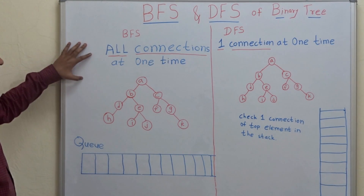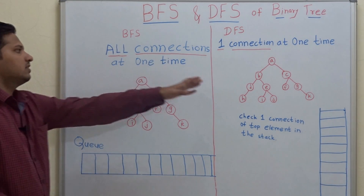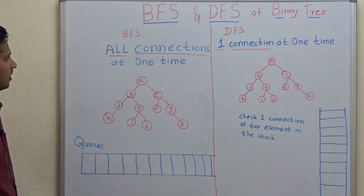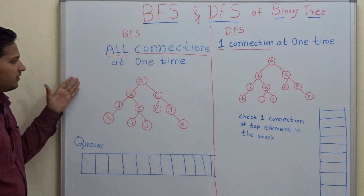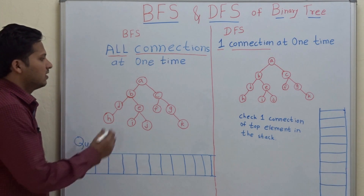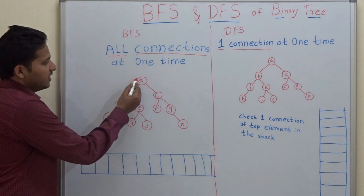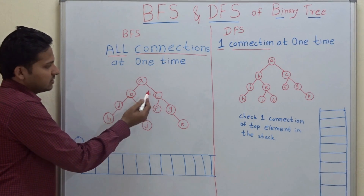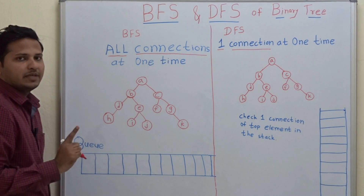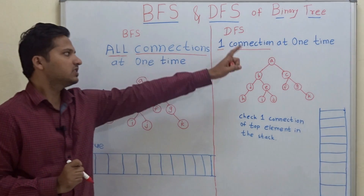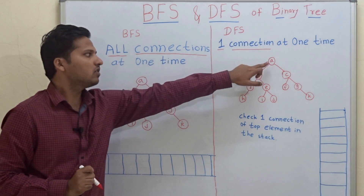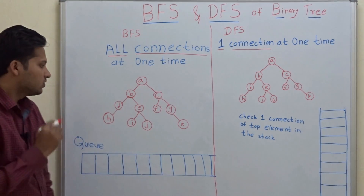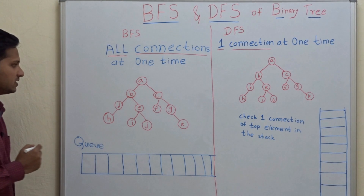This example is for BFS and this one is for DFS. In BFS, in a binary tree, we check all connections of a node at one time. In DFS, we check only one connection at one time. Let us see what the difference is.